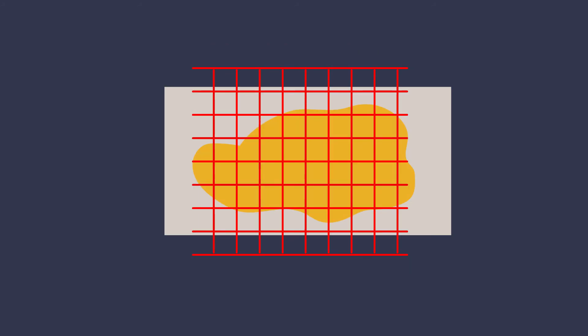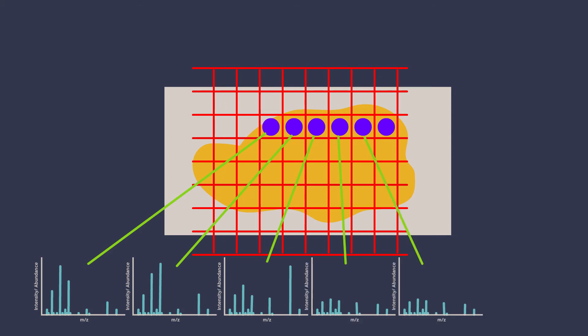The sample space is divided into grids, with each square called a raster. Within each raster, the laser beam will ionize a spot and the resulting ions will go through a mass spectrometer as described. A mass spectrum will be generated for every spot in the sample.